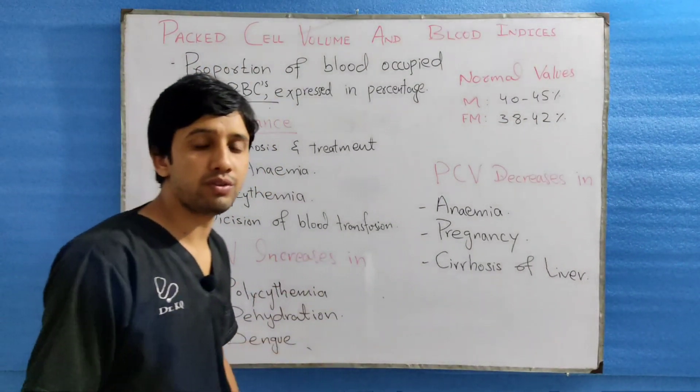Coming to its significance, PCV allows us to diagnose and treat different diseases like anemia and polycythemia, which is an increased RBC count. It also informs the decision of blood transfusion in a patient. These are the main clinical significances of the PCV.